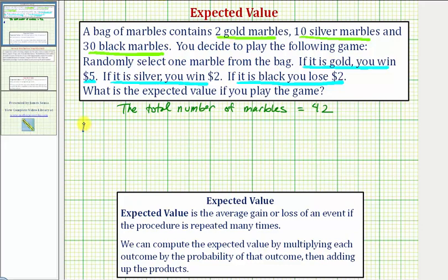So the expected value equals the outcome of winning $5. You win $5 if you select gold, so we multiply by the probability of selecting gold. There are two gold marbles out of 42, so the probability is 2/42. Plus the outcome of winning $2, so plus $2 times the probability of winning $2, which would be the probability of selecting a silver marble. There are 10 silver marbles out of 42, so we have 10/42.